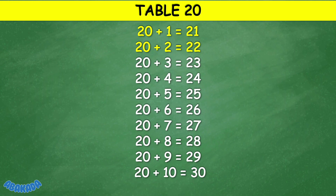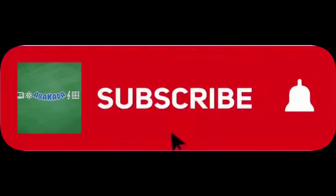Table 20: 20 plus 1 equals 21, 20 plus 2 equals 22, 20 plus 3 equals 23, 20 plus 4 equals 24, 20 plus 5 equals 25, 20 plus 6 equals 26, 20 plus 7 equals 27, 20 plus 8 equals 28, 20 plus 9 equals 29, 20 plus 10 equals 30. Thank you for watching.